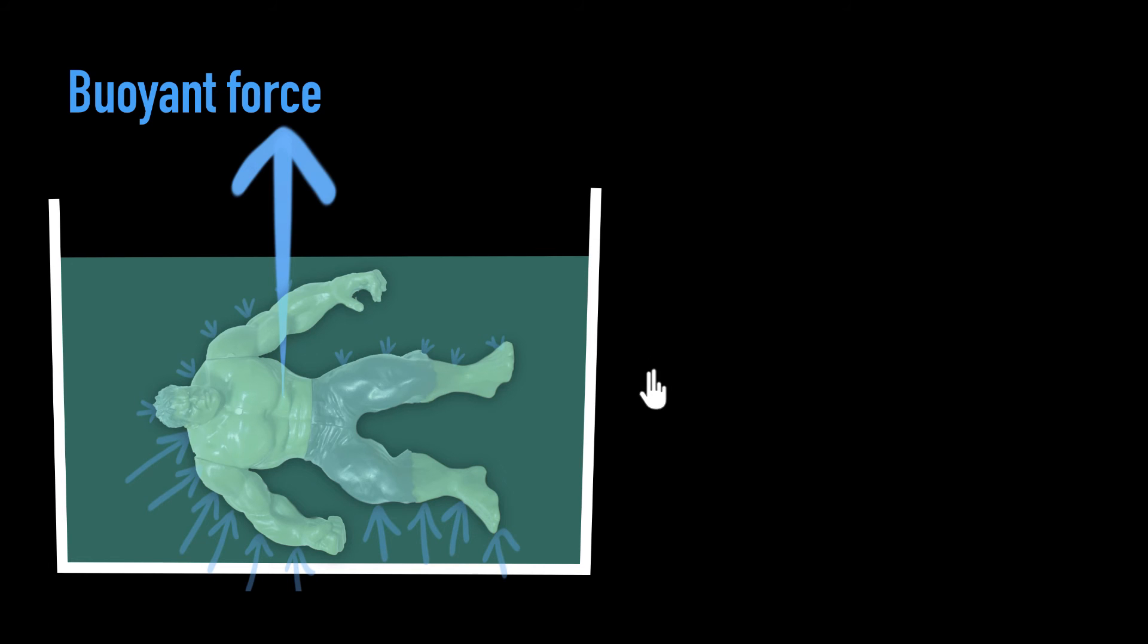Anyways, because the forces from the bottom is more, these forces don't cancel out. If you add them, we'll get a net force acting upwards. And that force itself is what we call the buoyant force. So it comes from the pressure of the water. But how do we calculate it?